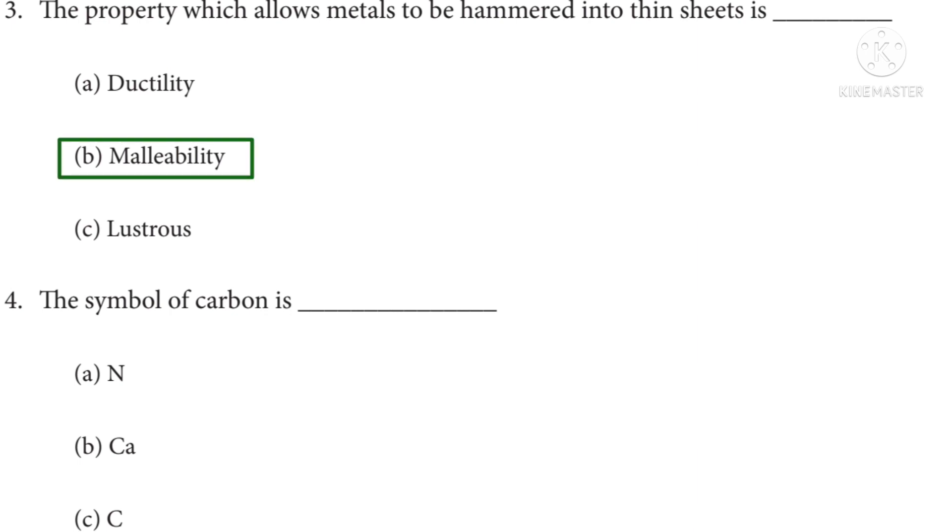Fourth question: the symbol of carbon is dash. Options: N, Ca, C. The correct answer is option C, C.